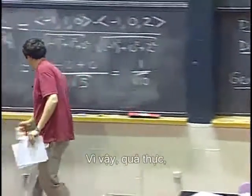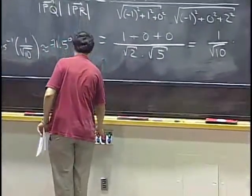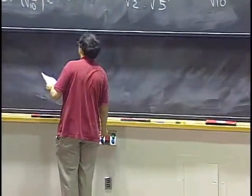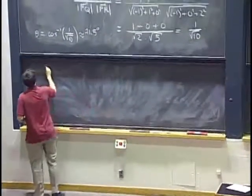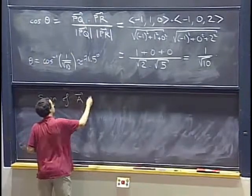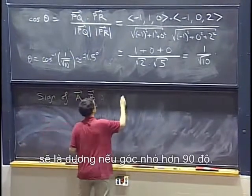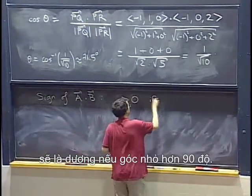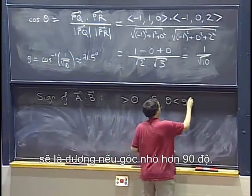In fact, the sign of A dot B is going to be positive if the angle is less than 90 degrees.